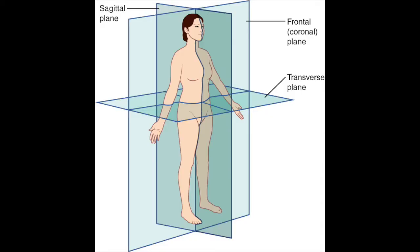The three planes of movement are the sagittal plane, which is forwards and backwards; the frontal plane, which is side to side; and the transverse plane, which is rotation.